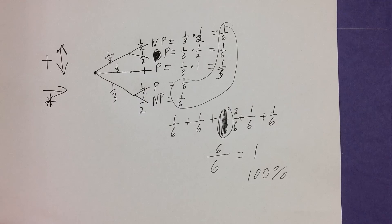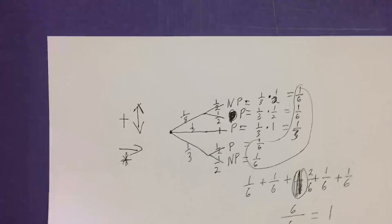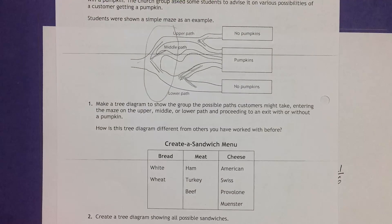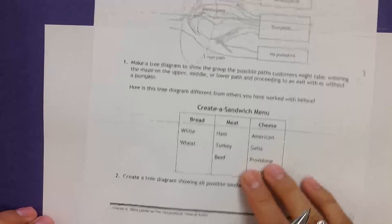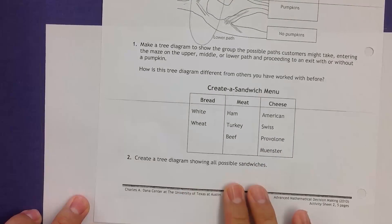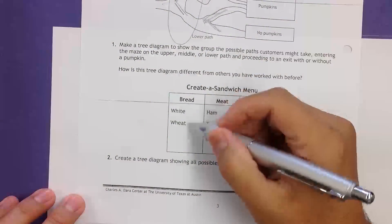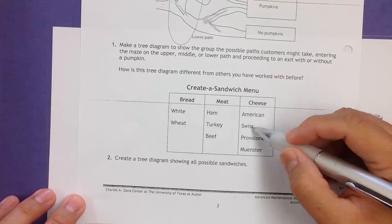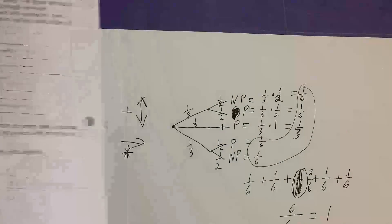That's the basic explanation. Now let's create a tree diagram showing all possible sandwiches from this menu. We have two bread choices: wheat and white. Three meat choices: ham, turkey, and beef. And four cheese choices: American, Swiss, Provolone, and Munster. I'm going to get a new sheet of paper so you can see this happening in real time. We can also use this tree diagram to obtain some probabilities.